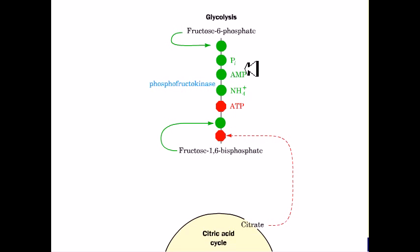It is inhibited allosterically by ATP, a co-substrate, and by citrate. This is the only example of a citric acid cycle intermediate regulating a glycolytic enzyme. Now we can see, just remember this very carefully: citrate is the only citric acid cycle intermediate which takes an interference in the glycolysis pathway.